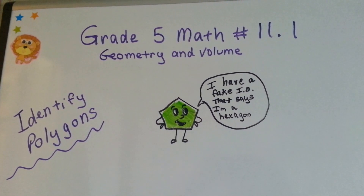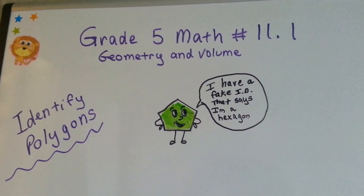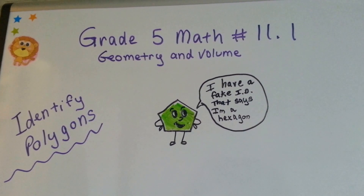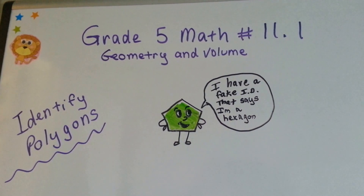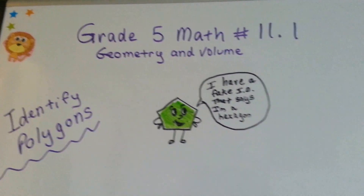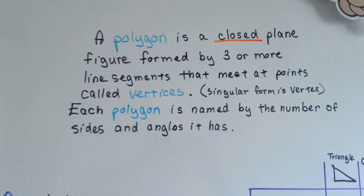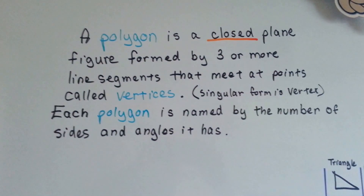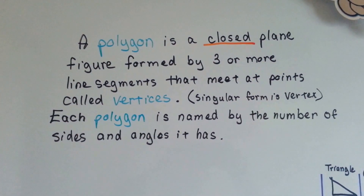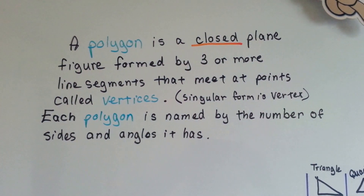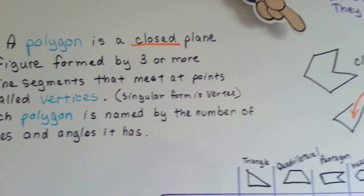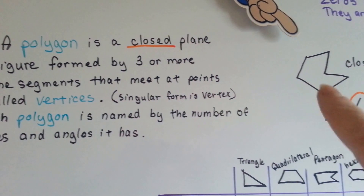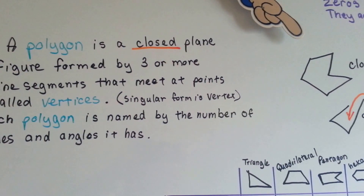Grade 5 math, number 11.1. This chapter is on geometry and volume. We're going to identify polygons. A polygon is a closed plane figure formed by three or more line segments that meet at points called vertices.